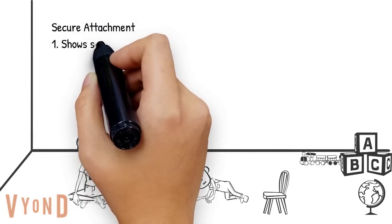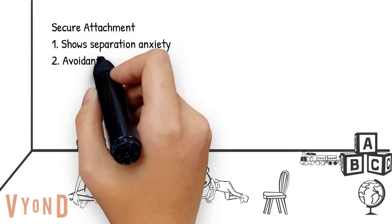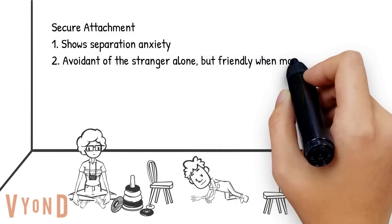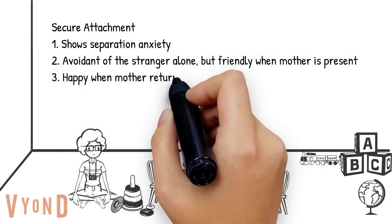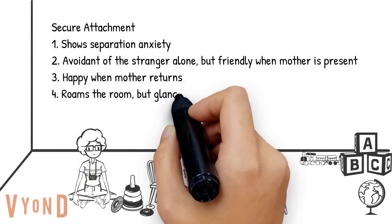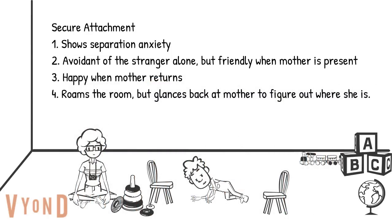The first style is called secure attachment. Securely attached children are definitely distressed when the mother leaves and avoidant of strangers unless the mother is in the room — in which case they're friendly. They're generally happy when the mother comes back. When with the mother they feel free to explore the room, though they always glance back to see where she is. About 70% of children are securely attached.